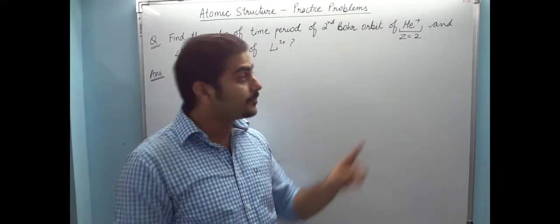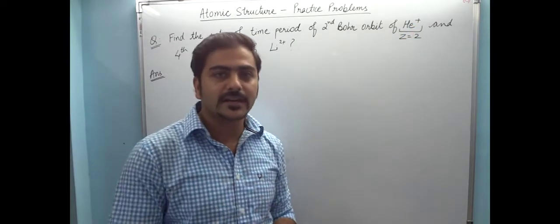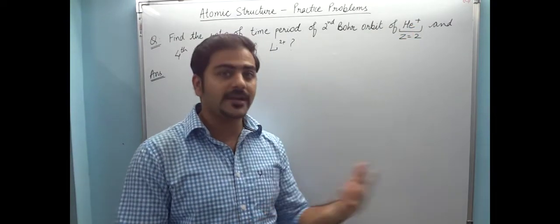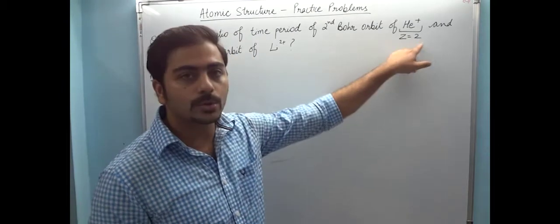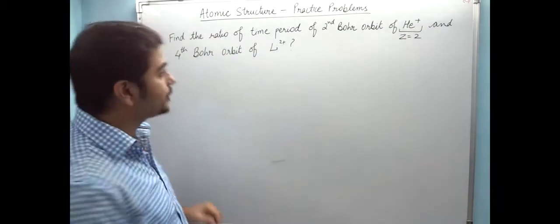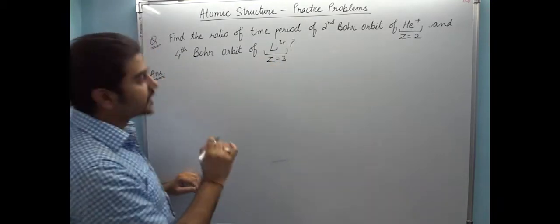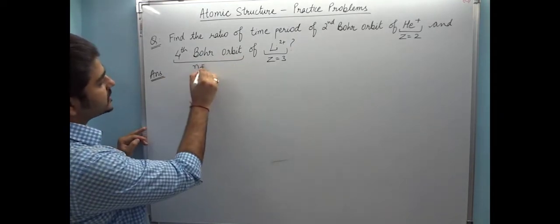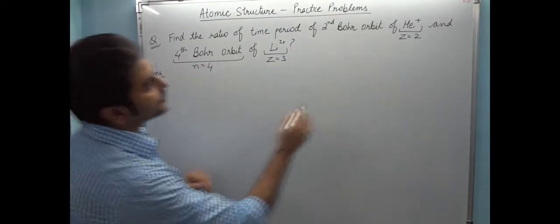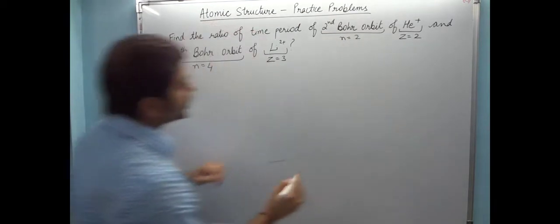One electron is removed because Bohr's model is only valid for single electronic species. This is why we have one electron removed, but protons are not removed, so Z=2. Similarly, lithium has Z=3. Fourth Bohr orbit means n=4.